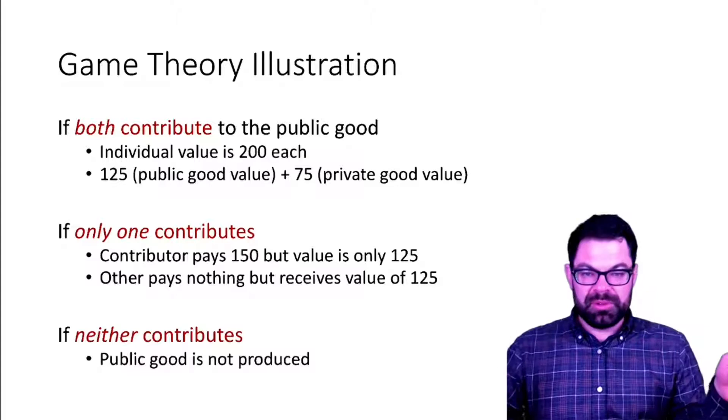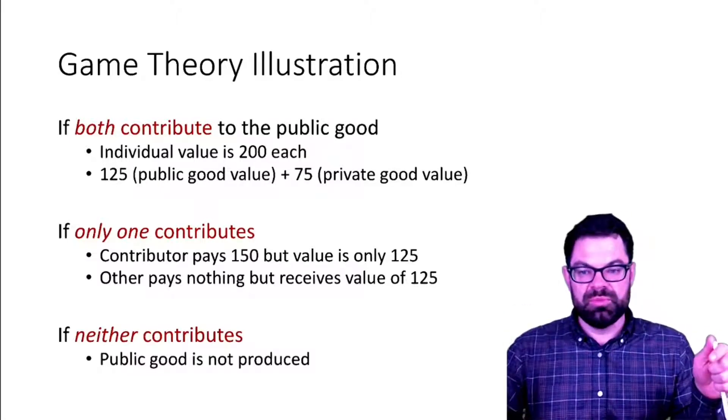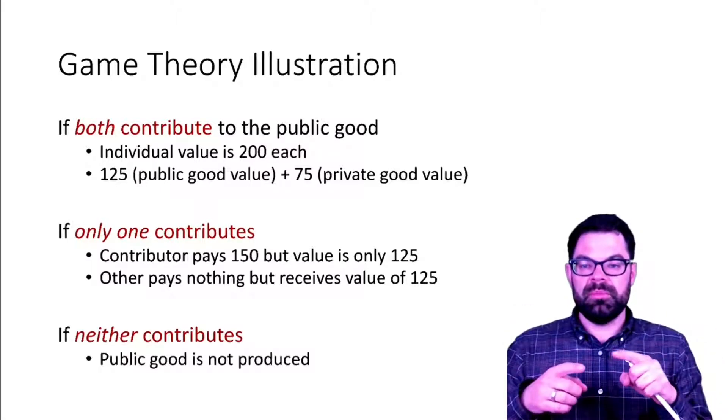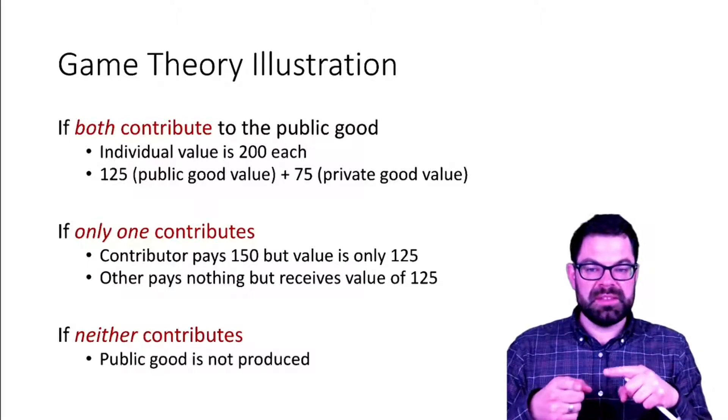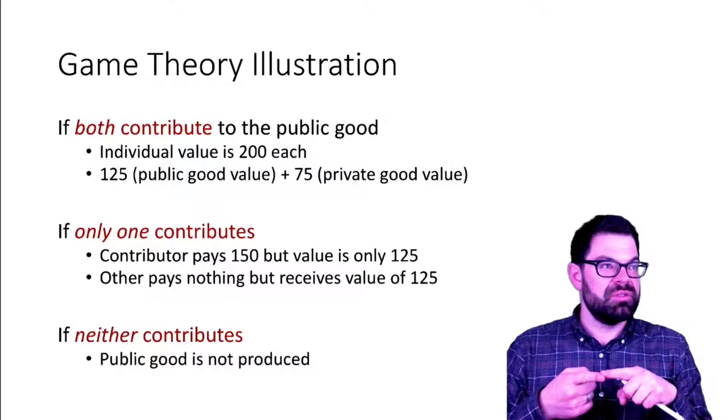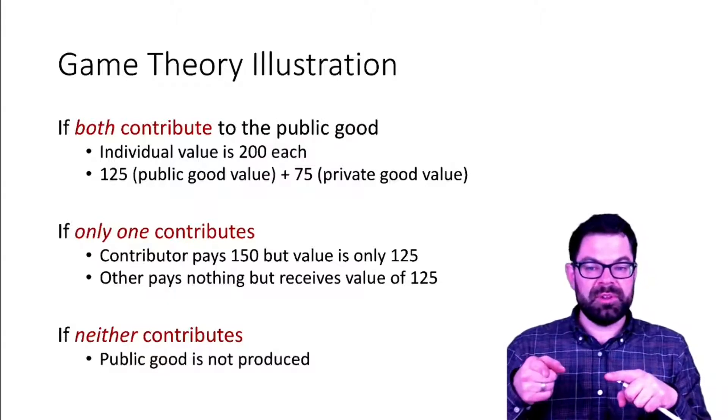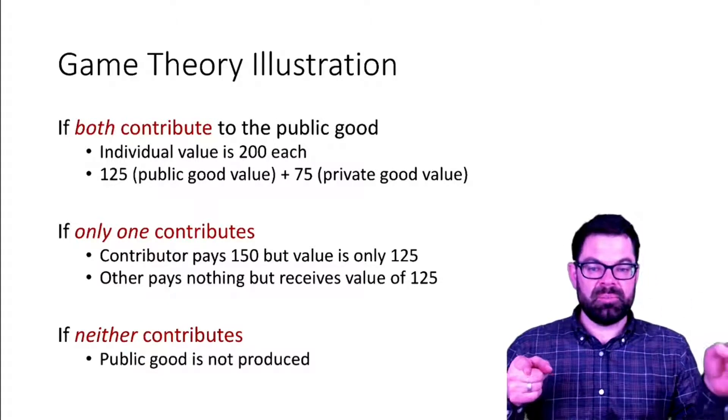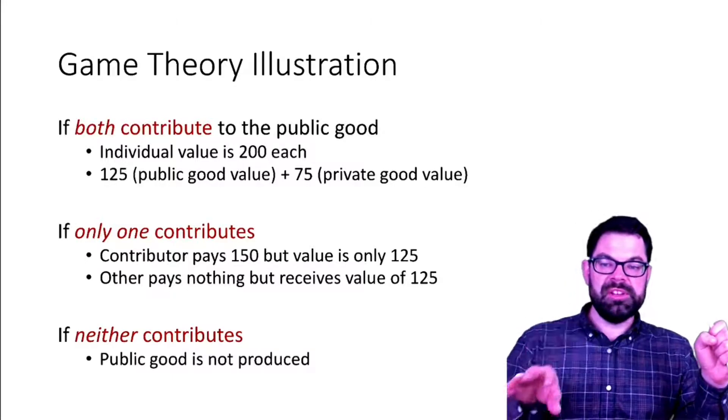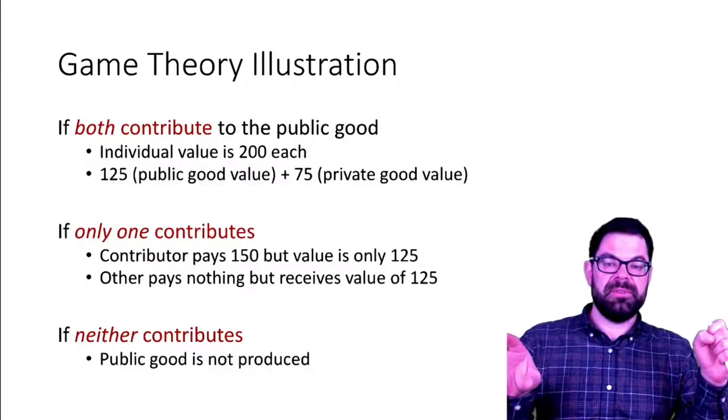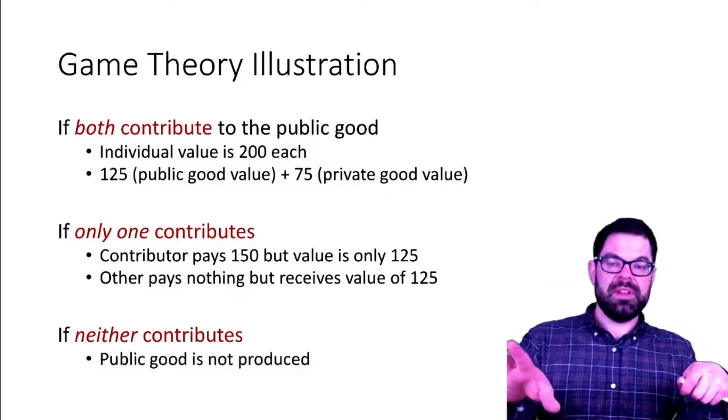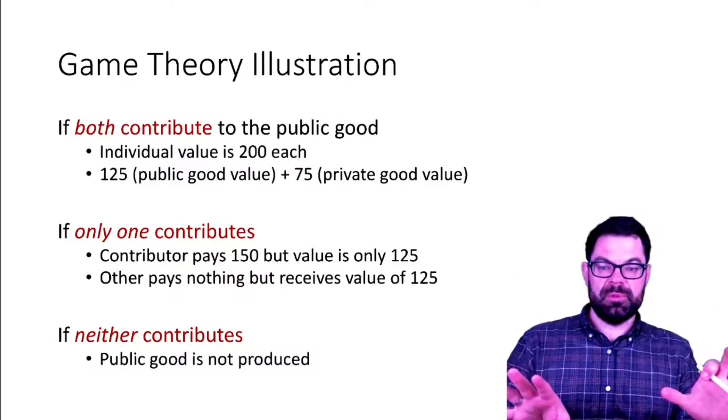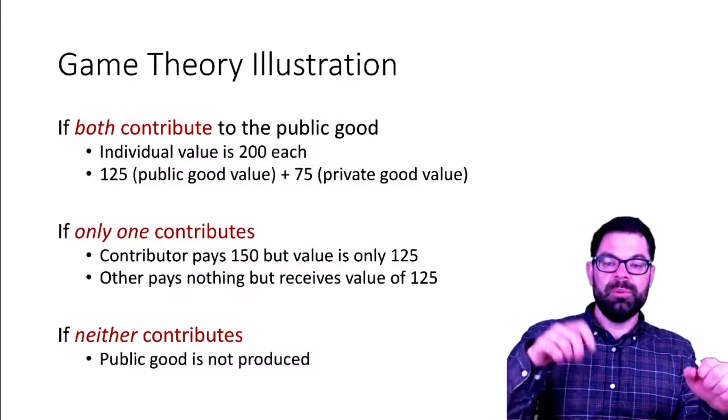If both contribute to the public good, the individual value is 200 each. Why? Because they spend 75 on the public good and 75 on the private good, but from the public good they actually get 125. So the value they get at the end is whatever they have from the public good and from the private good.